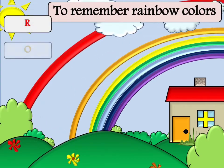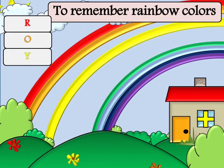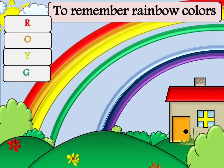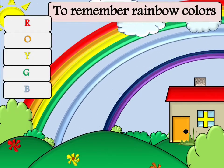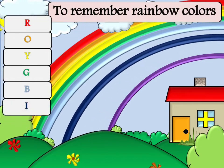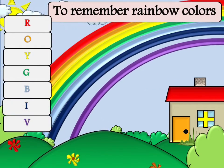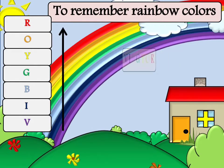These are the first letters of each color in a rainbow. R for Red, O for Orange, Y for Yellow, G for Green, B for Blue, I for Indigo and V for Violet.